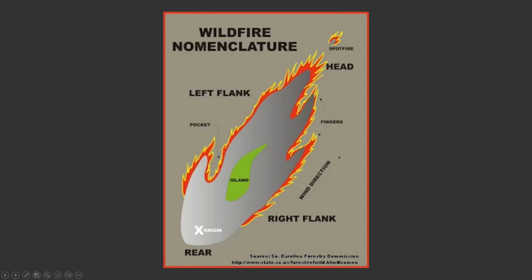The pocket is little areas where the fire hasn't burned completely up yet — kind of between the fingers. For example, here's a pocket, here's a pocket, here's a finger, here's a finger, here's a finger. And the left and right flank — this is always referred to from where the origin of the fire is. So from the origin, the left flank's on the left side, the right flank's on the right side. Everything is referred to from the origin looking towards the head of the fire — kind of like anatomical positioning for my EMS people out there, where it's not your right, it's the patient's right or the patient's left.